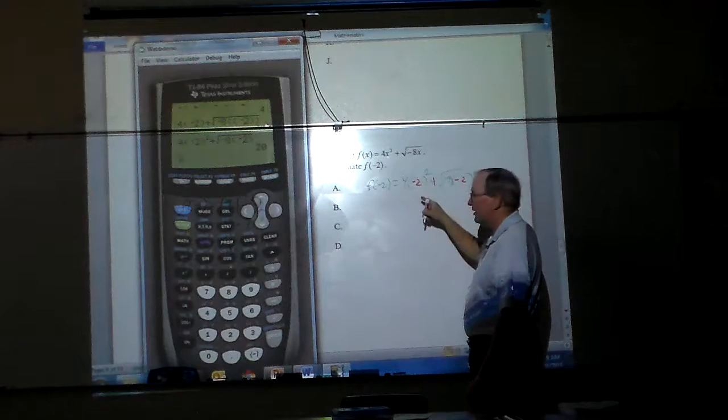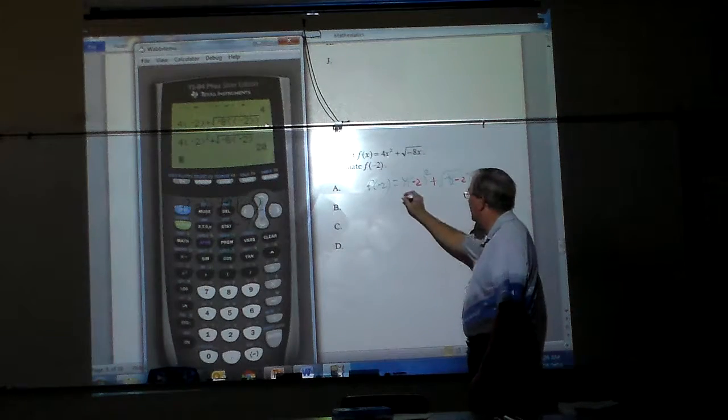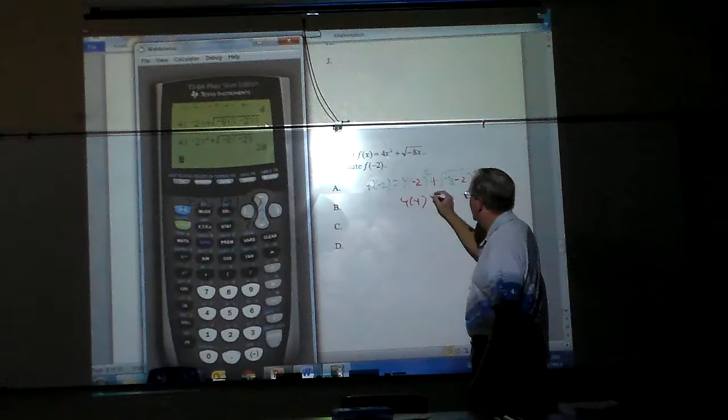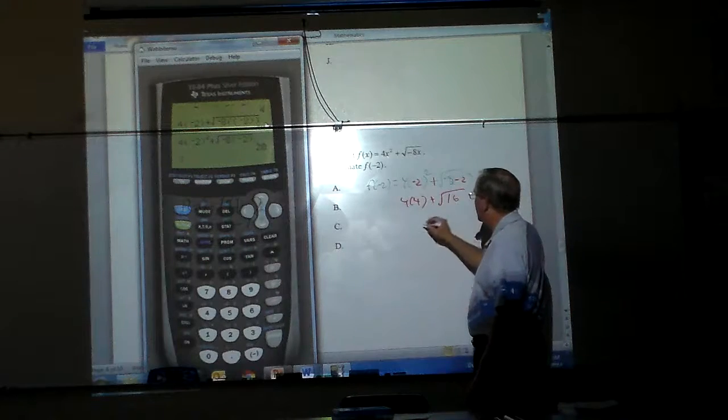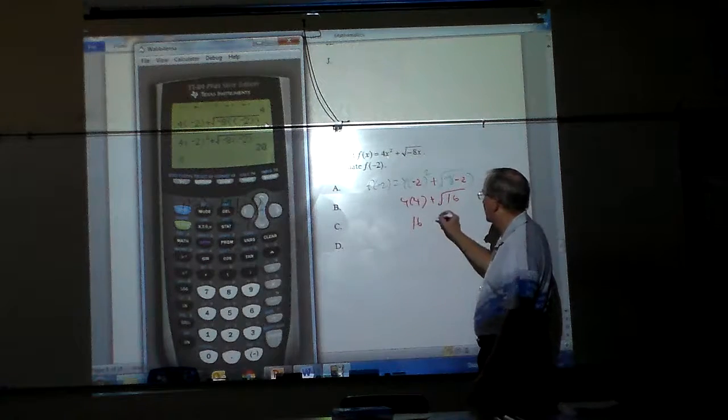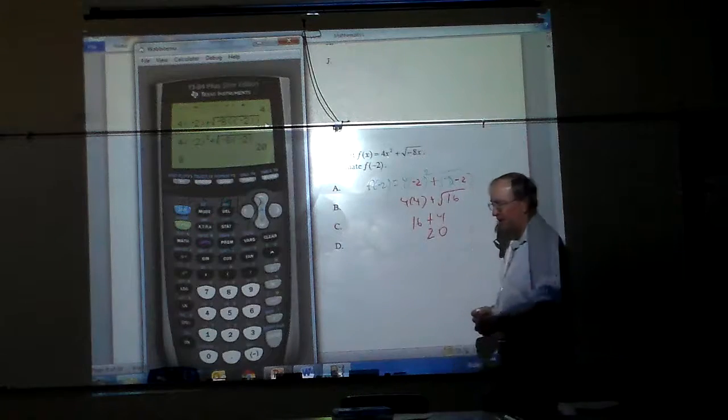Negative 2 squared is positive 4. So you have 4 times 4, plus, and negative 8 times negative 2 is 16. Well, 4 times 4 is 16, and the square root of 16 is 4, which makes 20. Be very careful.